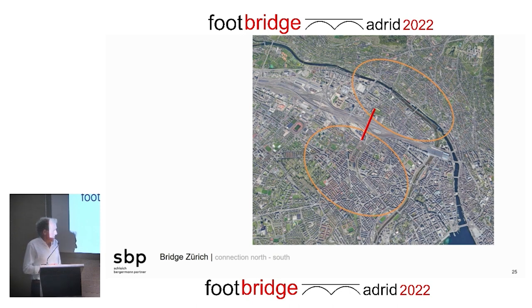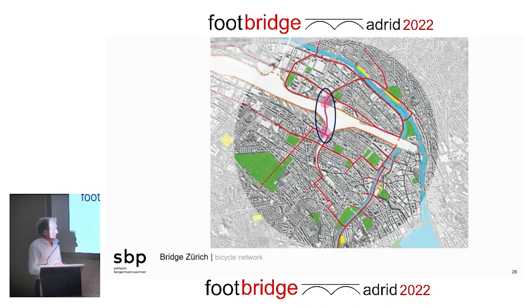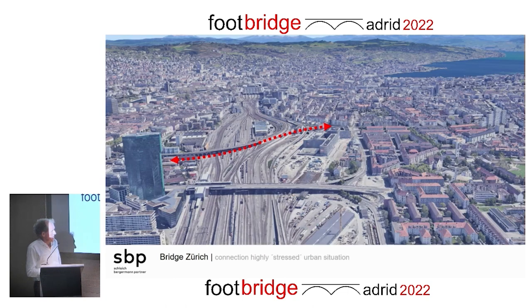I want to show two examples. The first is in Zurich — we took part thanks to globalization from Switzerland — together with Emichon Berger, Iden Brechbühl, and Kiki landscape architects. There was a big competition linking the north of Zurich to the south, crossing about 35 rails — a really tough task. It's more or less the main connection of two bicycle networks and is a huge project in Zurich. Looking at the bird's-eye view, you can see what's going on there.